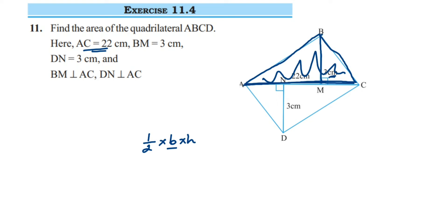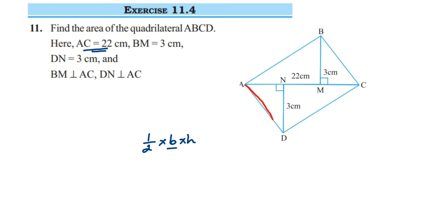Similarly, we are going to find the area of the lower triangle ADC. In this triangle also, the base will be AC, which is given as 22 cm, and the height is DN, which is 3 cm.